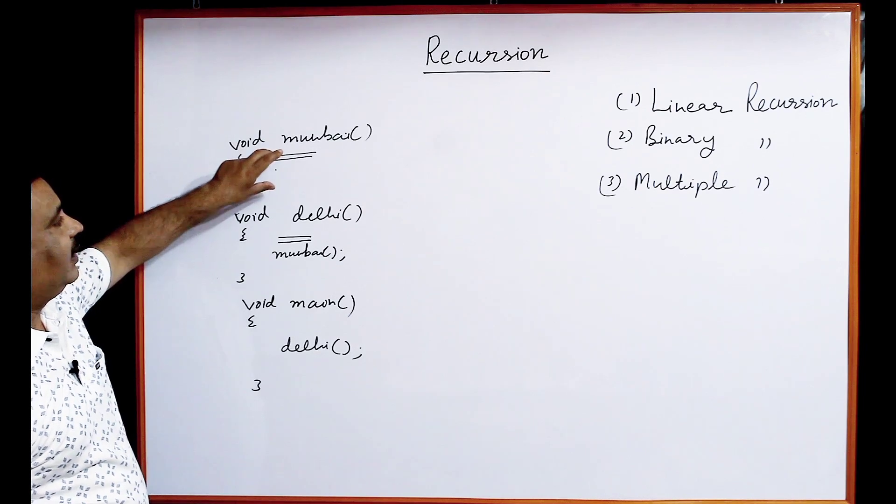Now, what is the stack? The stack is a group of memory — a set of memory blocks. Suppose this is a stack. When the main function is called, it creates one memory block. Then suppose we call a function Delhi — Delhi will create a second memory block. And suppose from Delhi we call Mumbai — Mumbai will create a third memory block. This way, each function call creates a new memory block.